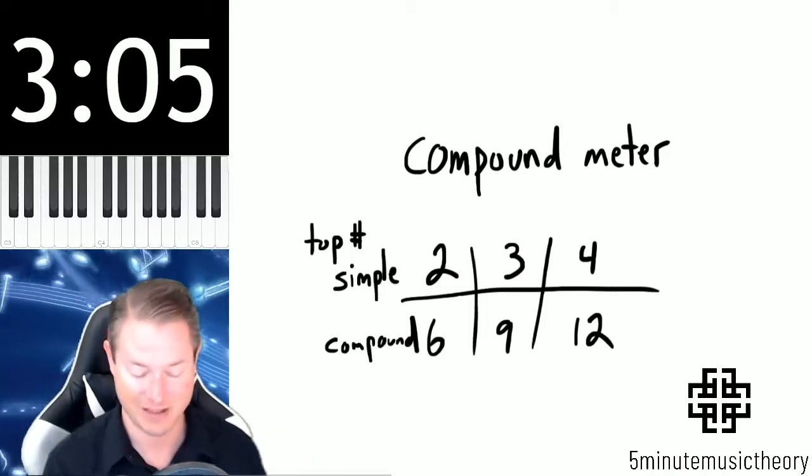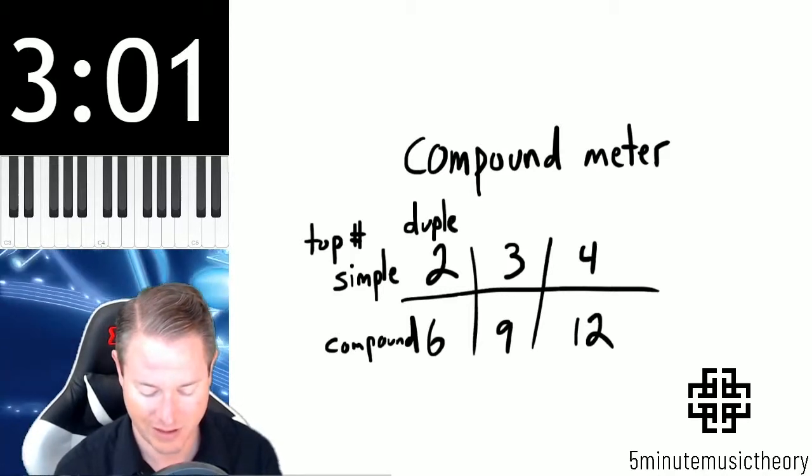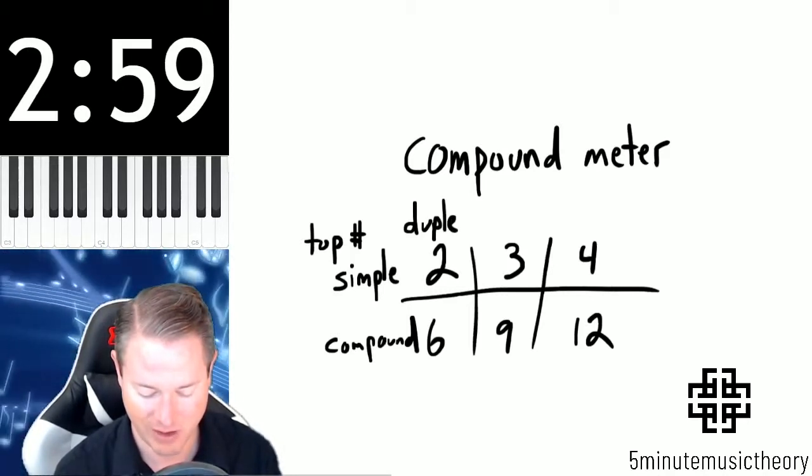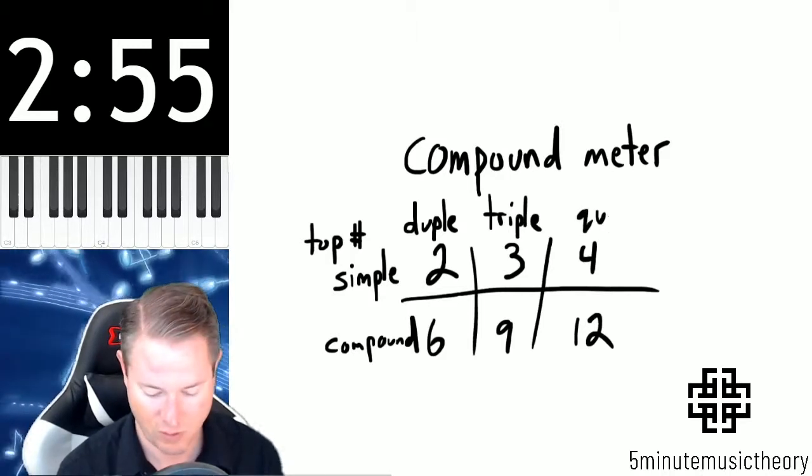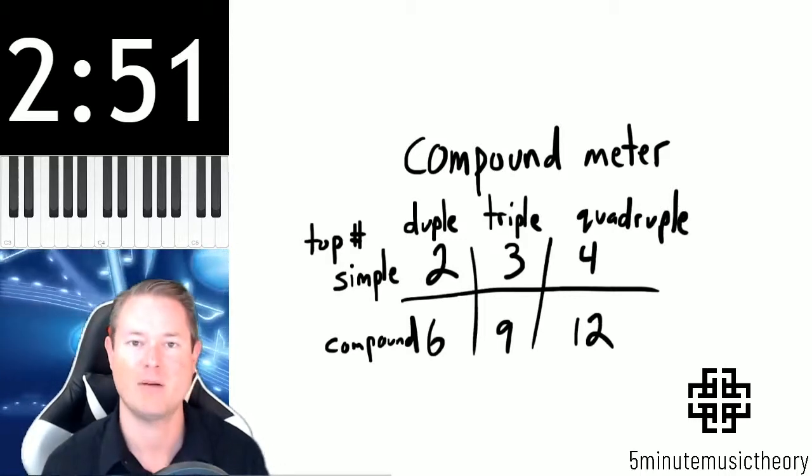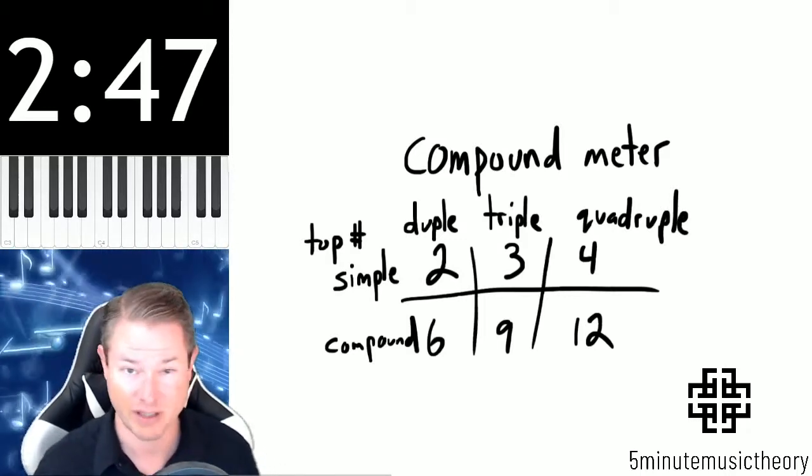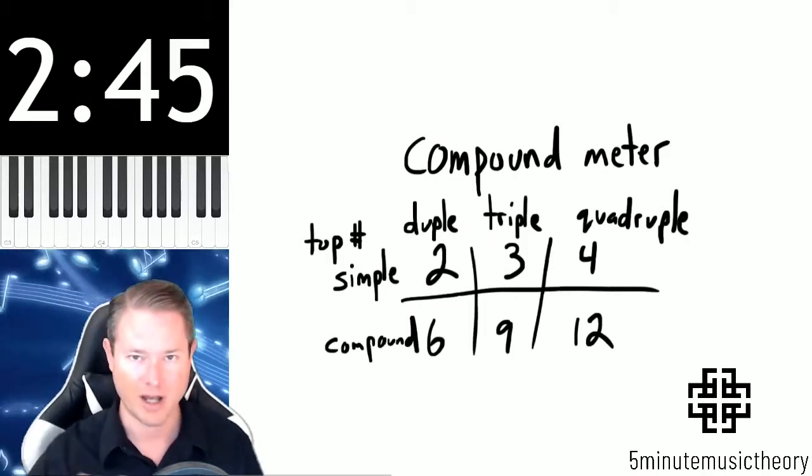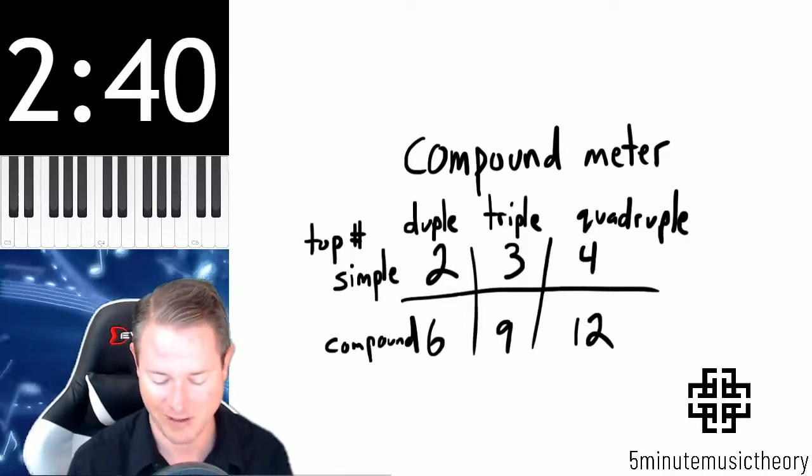And then I'm going to put some things on the top of this chart as well. Duple on the 2 and the 6, triple, and then quadruple. And all that indicates is how many beats there are. And you might think, well, isn't that redundant because the top number tells you how many beats there are? No, not always. Not in compound meter. That's true with simple meter, but compound meter is a little bit different.